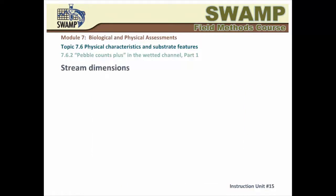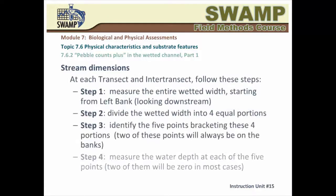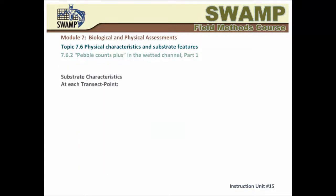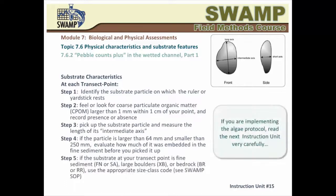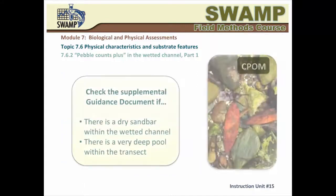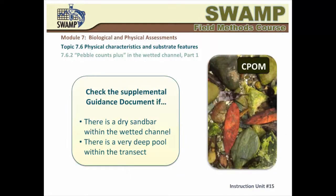In summary, the procedure of measuring channel dimensions is a four-step process that yields information about channel width at each transect or inter-transect and information about water depth at five points along each transect or inter-transect. These data will be used to calculate the average width and water depth for the entire reach. The substrate assessment procedure, pebble count, also provides valuable information about the dominant particle size, the amount of fine sediments, and the presence of organic particles such as decomposing leaves — coarse particulate organic matter, or CPOM — on the channel bottom.